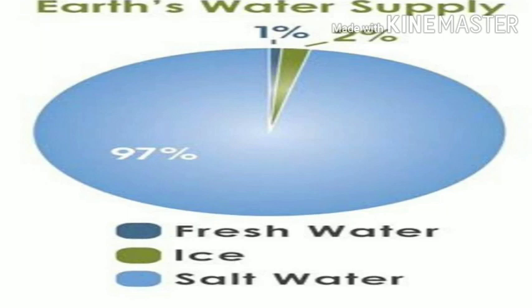The remaining 3% is fresh water. We call it fresh water because the dissolved salt content is very less, making it fit for drinking. Of the total fresh water, the major part is in the form of glaciers and ice caps, followed by underground water, and a small amount is in the form of rivers and lakes.